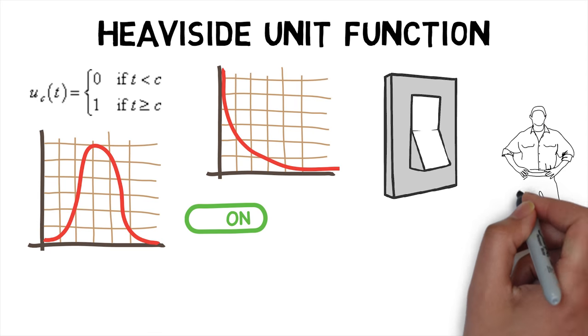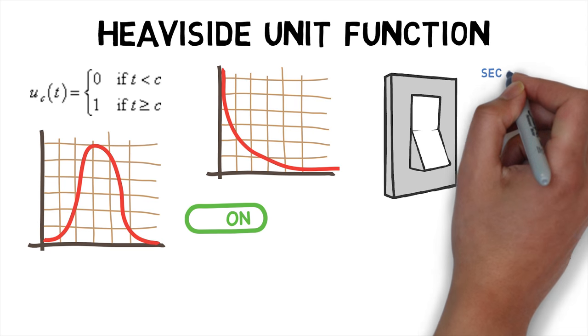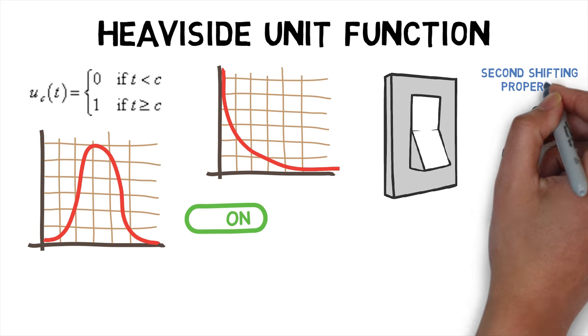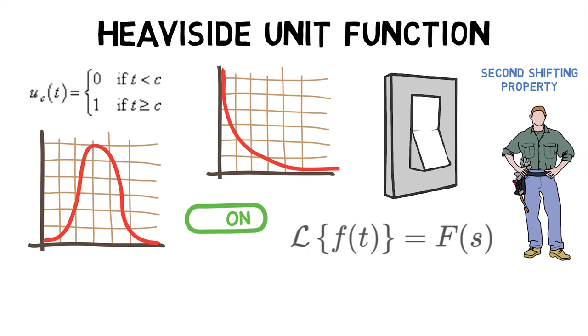To deal with the Laplace transforms of such functions, second shifting property is employed. It states that if Laplace transform of f(t) is equal to F(s) and g is a step function with g(t) equals f(t-a) for t greater than a and g(t) equals 0 for t less than a, then Laplace transform of g(t) is e^(-as) F(s).